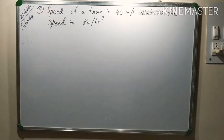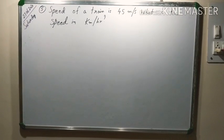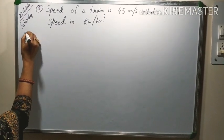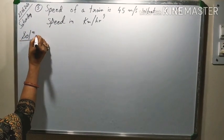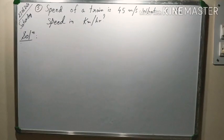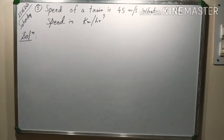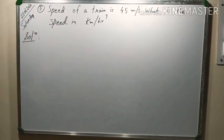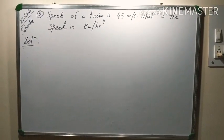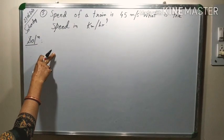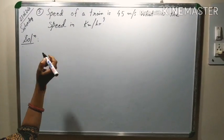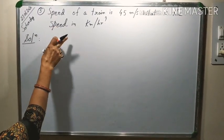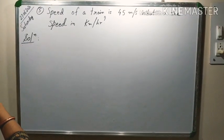5th question was speed of a train is 45 meter per second. What is the speed in kilometer per hour? Here this is the simplest question but due to this unit problem many of the students could not solve it correctly. Here as its unit is telling 45 meter per second, meter per second means what? Distance is in numerator and time is in denominator. So, when we have to change this speed into kilometer per hour means the distance is to be changed into kilometer and time is to be changed into hour.